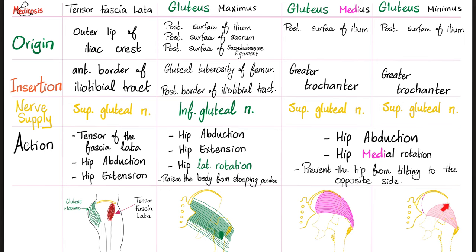The goal is hip abduction. If you want to abduct the hip, you need to attach to the hip bone and insert into the lateral aspect of the femur — medicine makes so much sense once you understand what you're talking about. The tensor fasciae latae originates from the outer lip of the iliac crest and inserts into the iliotibial tract, which is a very strong fascia and part of the fascia latae. Its function is to tense the fascia latae; it's also an abductor.